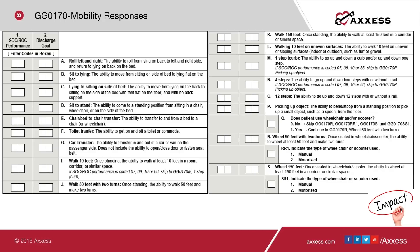When we get to the one-step curb, another skip pattern applies — because if a patient can't walk 10 feet, they can't walk 150, and if they can't climb one step, they surely cannot climb 4 or 12. That skip pattern takes us to item P, picking up an object. Items Q through S cover wheelchair and scooter use — wheeling 50 feet with two turns, and wheeling 150 feet, for both manual and motorized options. Code the performance and discharge goals with the patient's input.